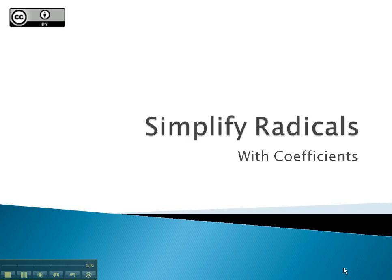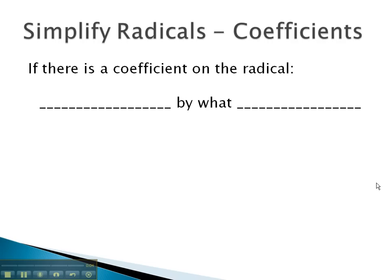In this video, we will look at simplifying radicals which have coefficients. If a coefficient is multiplied by the radical, then we will simply multiply the coefficient by what comes out.